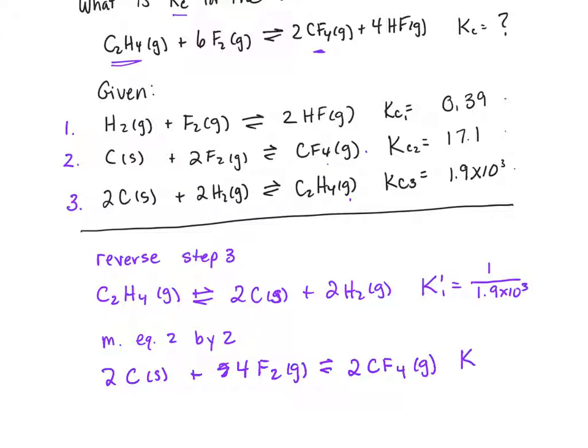And when we multiply an equation by a factor, we raise K to that factor. So we'll call the new K, K prime 2, and we're going to say this is equal to KC2 squared, or 17.1 squared.